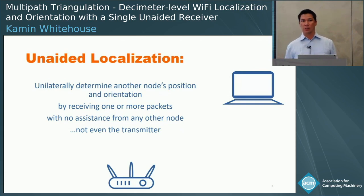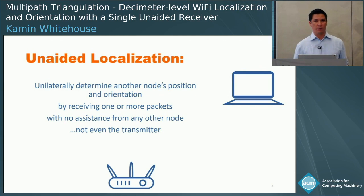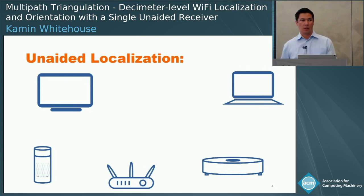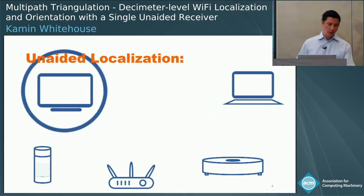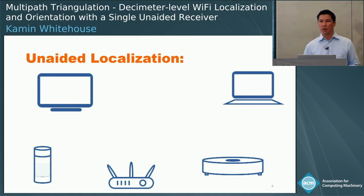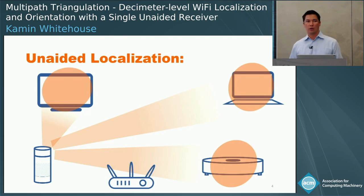It doesn't have to be the access point that's locating things. In many environments like a home, there are often many things in the house transmitting to the access point. But if unaided localization is possible, any node that overhears those messages can locate all of those devices.